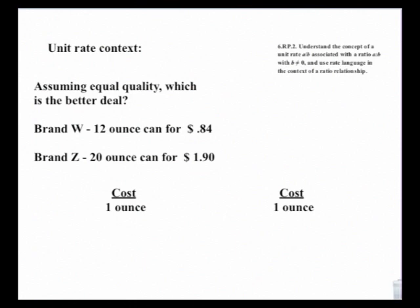In this context, we have two different cans of some item and we want to figure out which is a better deal. This is a situation where unit cost is advantageous because it enables you to compare apples to apples. It's hard to tell just by looking whether brand W at 12 ounces for 84 cents is a better deal than 20 ounces for $1.90. So we need to find the unit rate for each brand. You always want students to write out what they're comparing — in this case, the unit rate of cost for every ounce.